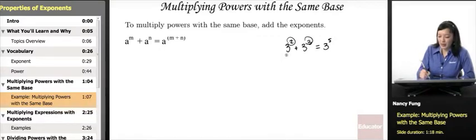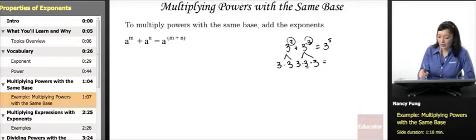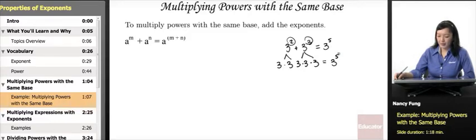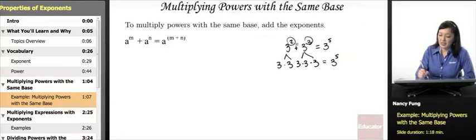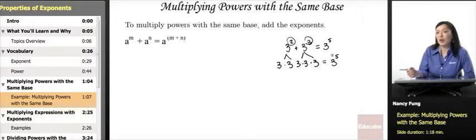Let me illustrate this by writing it out. 3 squared is 3 times 3, and 3 cubed is 3 times 3 times 3. If we count that up, we have 5 threes, giving us 3 to the 5th. It's often difficult to keep track of the rules for exponents since they differ for raising a power to a power. A good way to remember is to write it out — if you count the factors, you'll see there are 5 of them, confirming you should add the exponents.